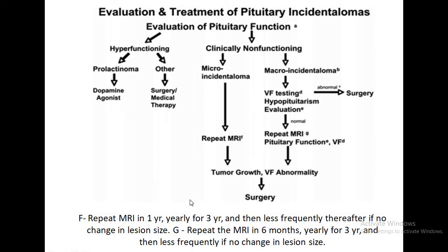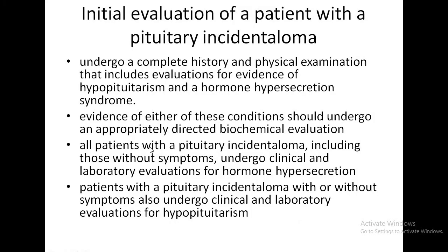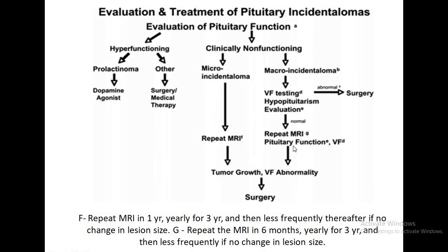For a micro incidentaloma, repeat the MRI yearly for three years and then less frequently. For a macro incidentaloma, repeat the MRI at six months after detection, then yearly for three years, and then less frequently. The key difference is that for micro you start with annual MRI up to three years, while for macro you do the second MRI at six months and then annually for three years.